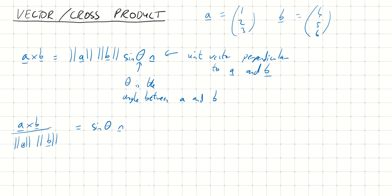If we take the magnitude of both sides of both sides of this, the left-hand side gives me the magnitude of A cross B. The right-hand side, because N has magnitude 1, the right-hand side just becomes sine theta.